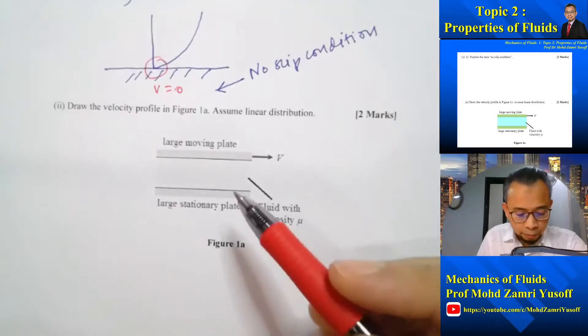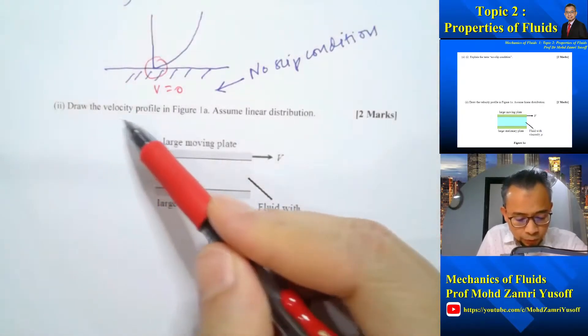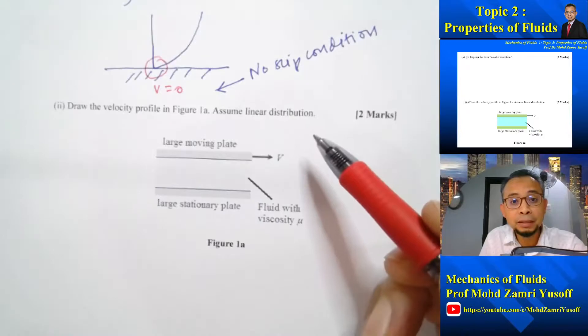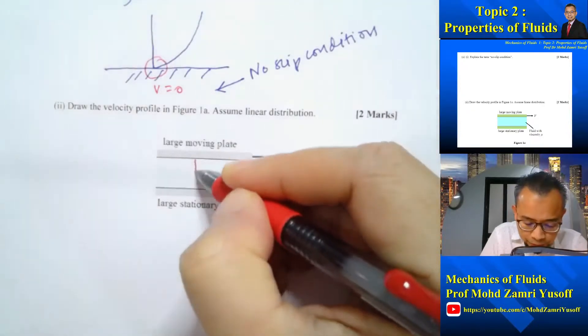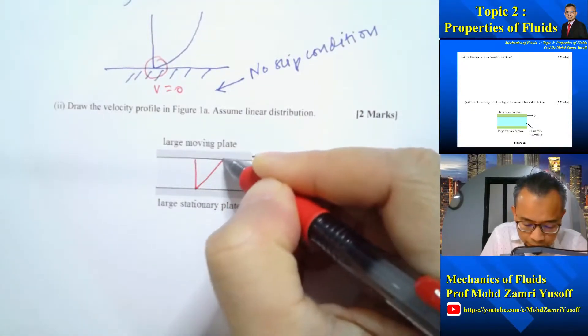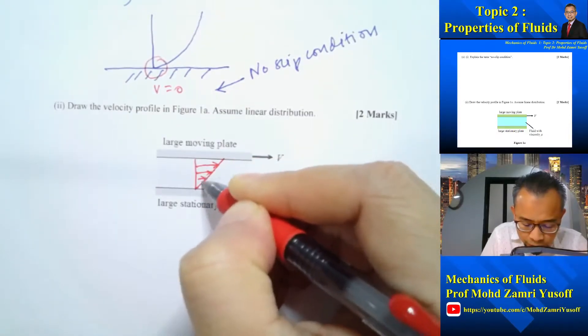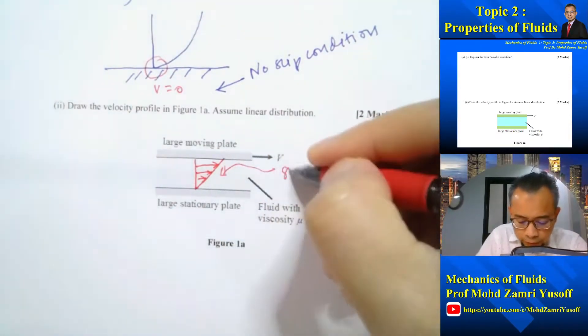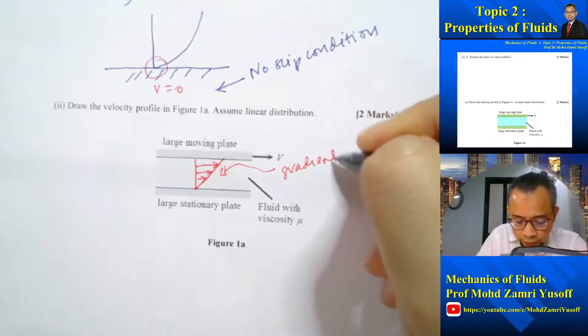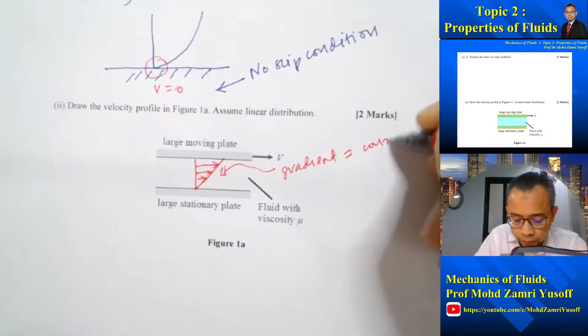In the second part we are asked to draw the velocity profile assuming linear distribution. So that will be the velocity profile gradient equal to constant.